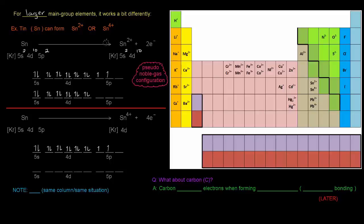It can also form a 4+ ion. Its configuration starts as 5s2 4d10 5p2. We can imagine losing those first two 5p electrons; the next highest would be 5s, and it loses those two as well.